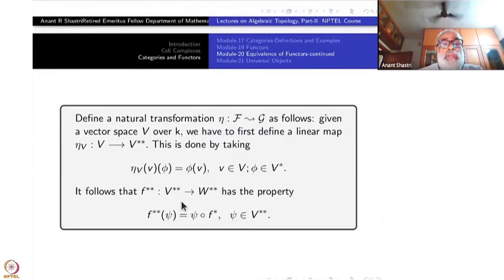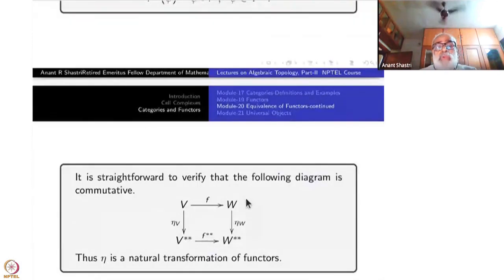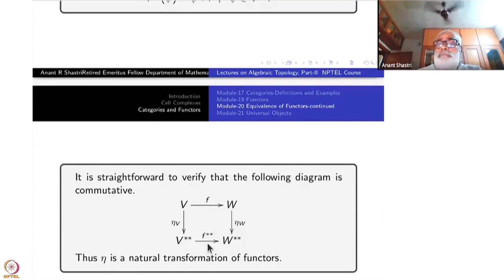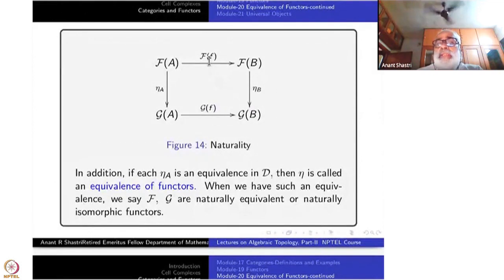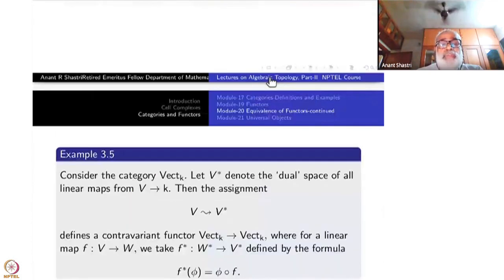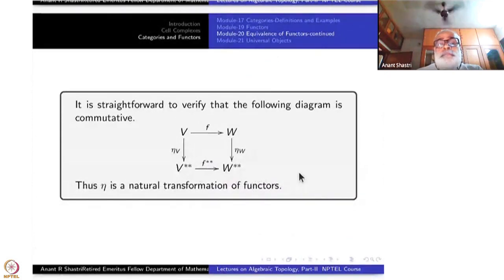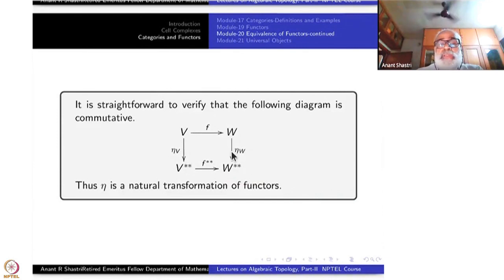It is straightforward to verify that the following diagram commutes: V to W via f, V to V double star via eta_V, W to W double star via eta_W, and V double star to W double star via f double star. This is because F is the identity and G takes double star. You take a vector v and check that eta_W of f of v equals f double star of eta_V of v, confirming they are compatible.